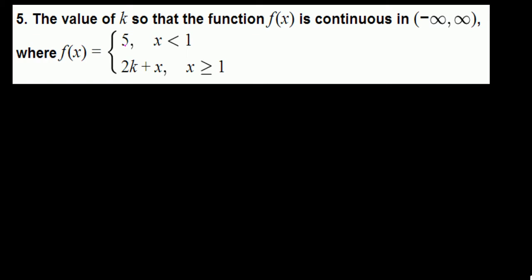5 is continuous for all real numbers, 2k plus x is also continuous for all real numbers, so the issue here is at 1, because f is defined by 5 before 1, and 1 and after, the function is given by different pieces.